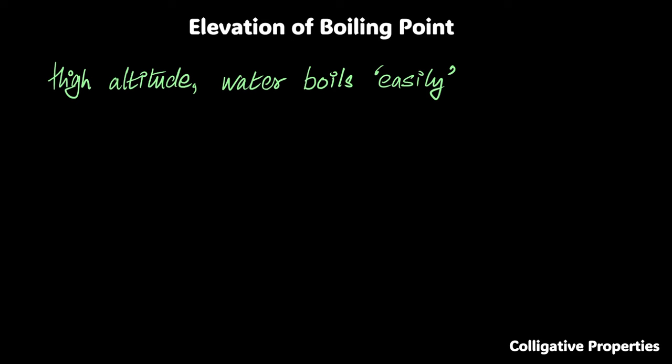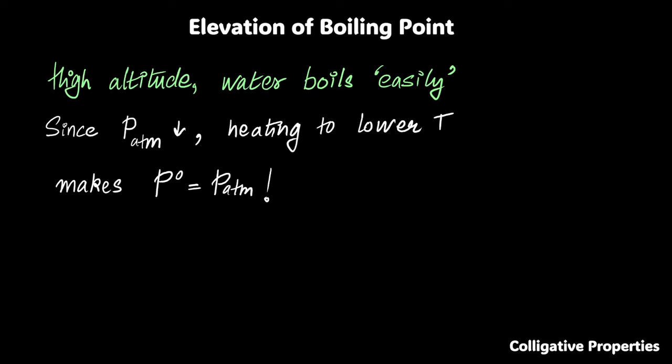When you are at a hill, high altitude, water boils easily. If you try to cook, food doesn't cook really well. So what do you do and why does it happen in the first place? We'll address both of those things. As you go high up altitude wise, atmospheric pressure reduces. So you can heat to a lower temperature to get to that same pressure that needs to get to the atmospheric pressure.